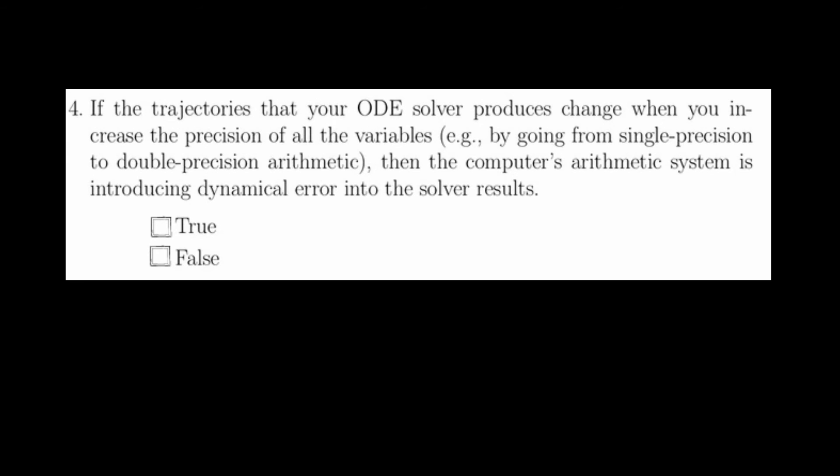For question 4, if the trajectories that your ODE solver produces change when you increase the precision of all the variables, that is, going from single precision to double precision arithmetic, then the computer's arithmetic is introducing dynamical error into the solver's results. This is true. This is exactly what's happening.